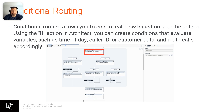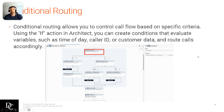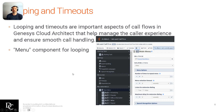Conditional routing allows you to control call flow based on specific criteria. Using the if action in Architect, you can create conditions that evaluate variables such as time of day, caller ID, or custom data, and route calls accordingly. For this example here, it's a decision — kind of like an if — checking whether a value is not set or empty. We do a lot of whisper tones. In this one, the whisper tone is coming from a data table where we're setting a bunch of different variables, one of them being task.s_whisper. We're looking to see if that field in the data table is filled out. If it is filled out, it follows the no path, plays the whisper tone prompt, and continues. If it is empty, it just logs that it was empty, plays nothing, and continues on.